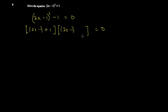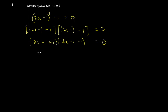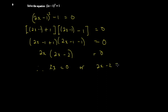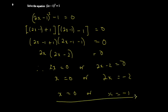The square root of 1 is 1. So you get (2x minus 1 plus 1)(2x minus 1 minus 1) equal to 0. Here you get 2x, and here you get 2x minus 2 equal to 0. So 2x equals 0 or 2x minus 2 equals 0, giving x equals 0 or x equals 1. This is the second way of working out the same problem.